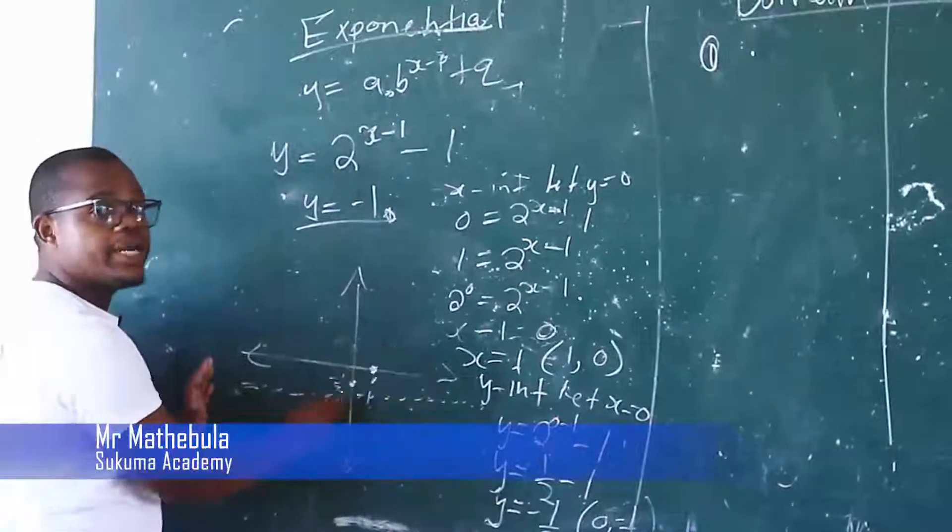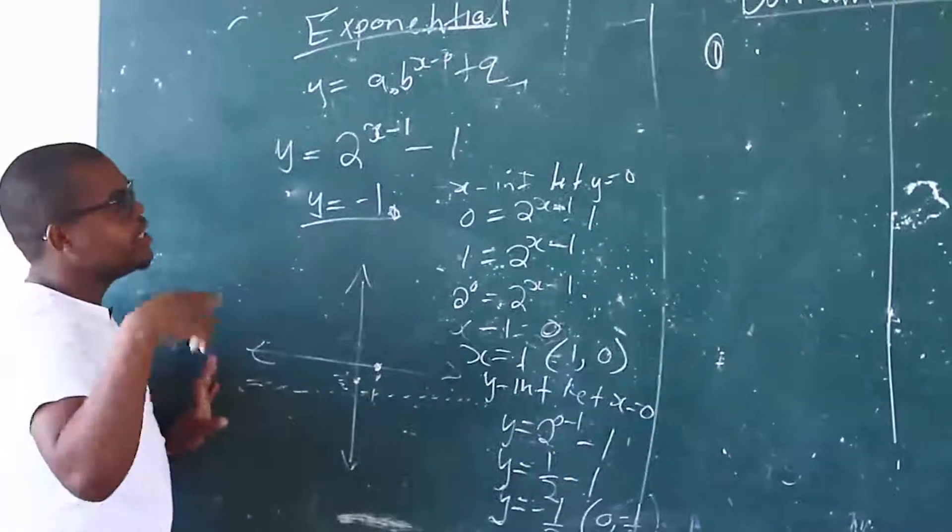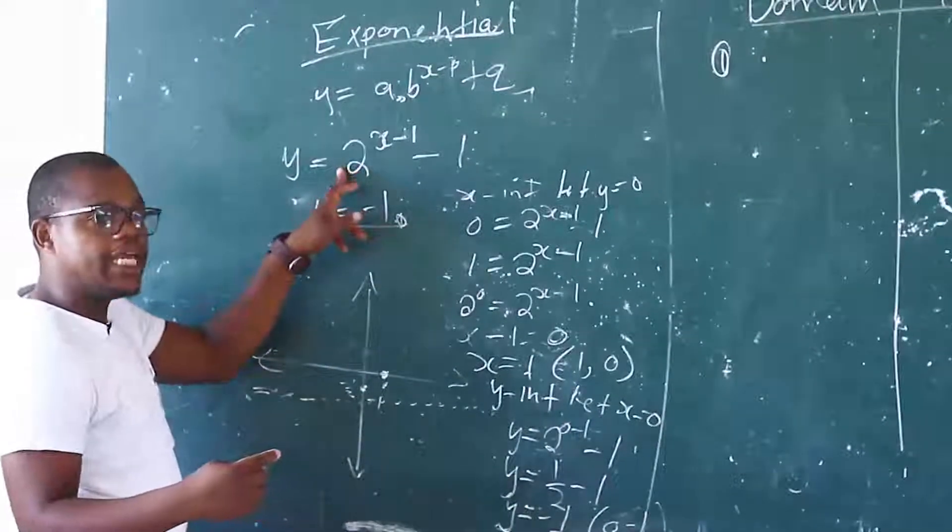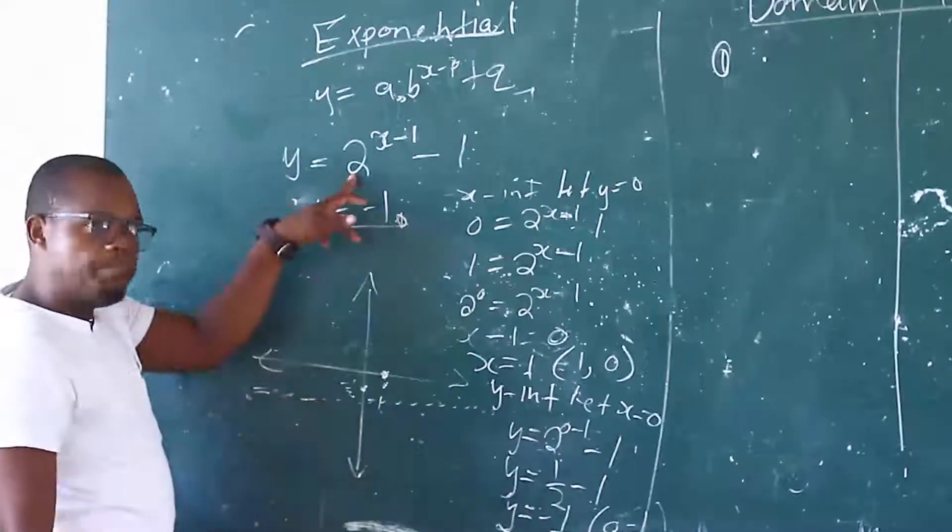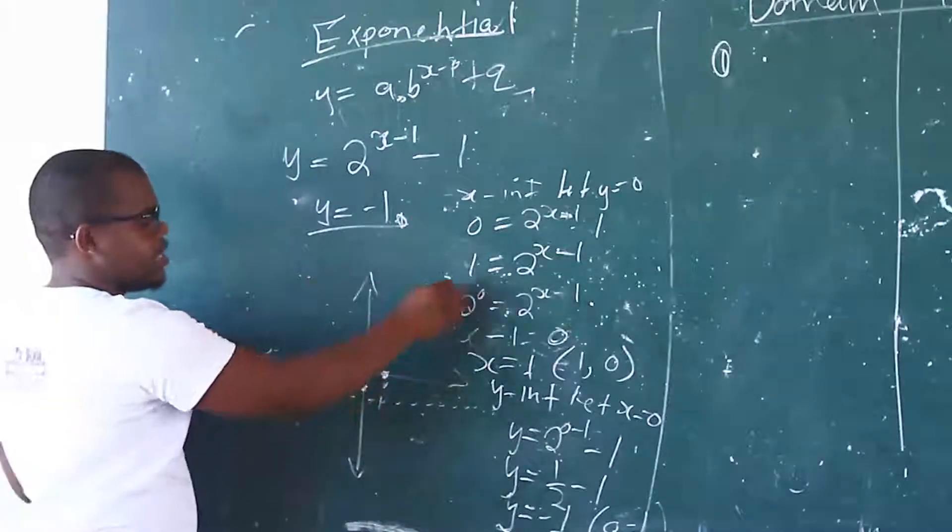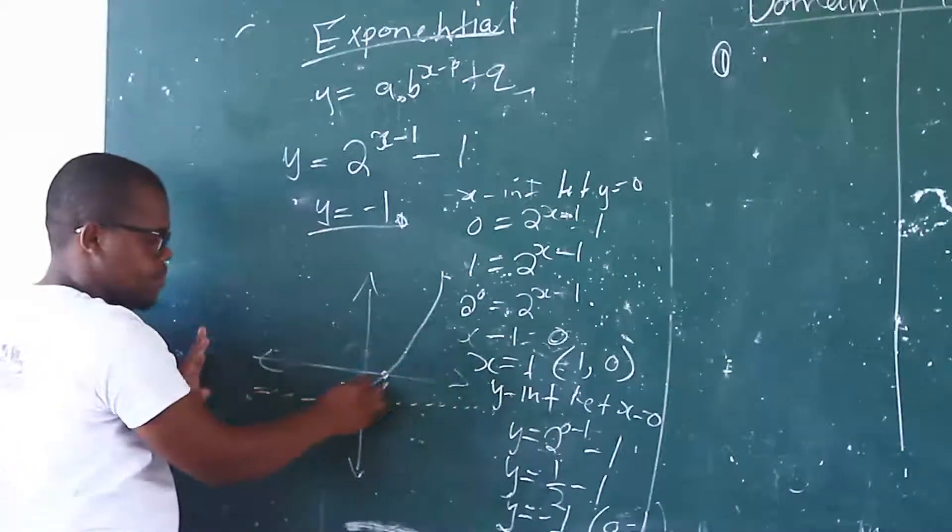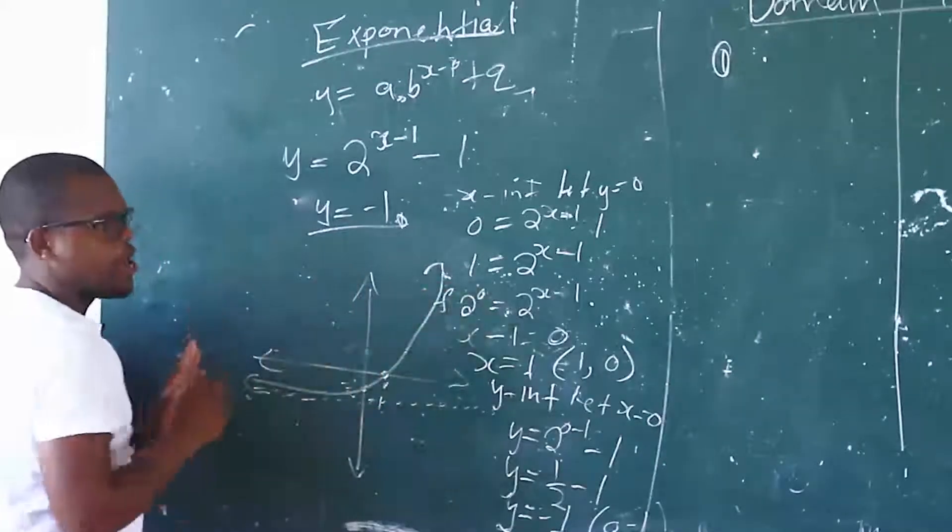So now, if you want to see the shape of A, the shape of A is positive. Since B is greater than 1, that means you come from the right-hand side. This is why you want to see the shape of A. So this is the graph of F.